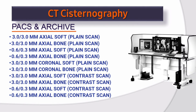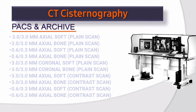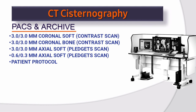Data for PACS and archive system: 3×3 mm axial soft plain, 3×3 mm axial bone plain, 0.6×0.3 mm axial soft plain, 0.6×0.3 mm axial bone plain, 3×3 mm coronal soft plain, 3×3 mm coronal bone plain, 3×3 mm axial soft contrast, 3×3 mm axial bone contrast, 0.6×0.3 mm axial soft contrast, 0.6×0.3 mm axial bone contrast, 0.6×0.3 mm coronal soft contrast, and patient protocol.